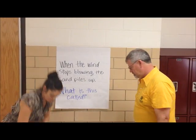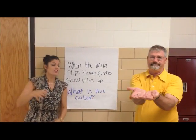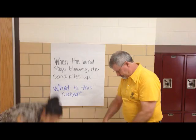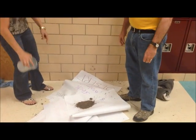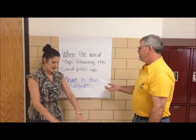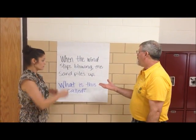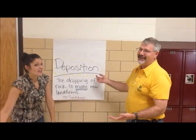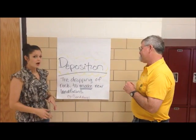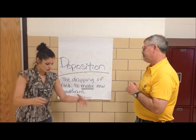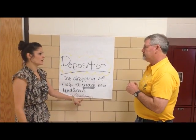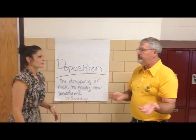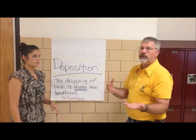When the wind stops blowing and there's no more dirt flying, the dirt has to land somewhere, and when it lands somewhere it's going to pile up and make a big pile. What is that called when it lands and makes something new? It's like depositing it somewhere, so we call it deposition. Deposition is the dropping off of rock to make a new landform. For example, in the desert there are sand dunes — just piles of sand built up. Or even on a beach when it blows the sand it'll make sand dunes, so it doesn't always have to be the desert.